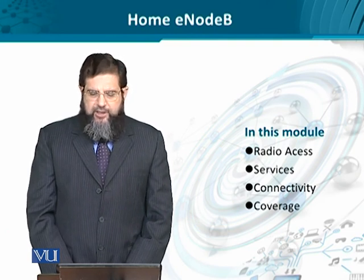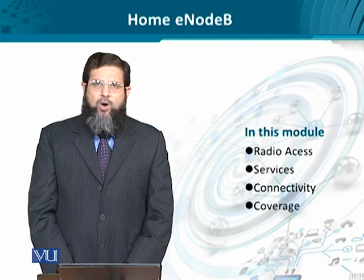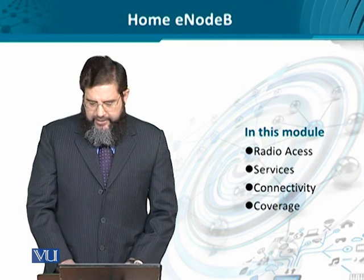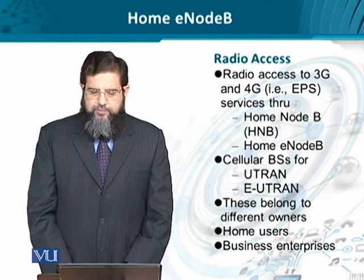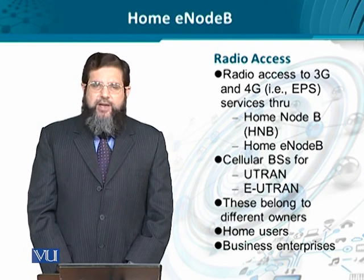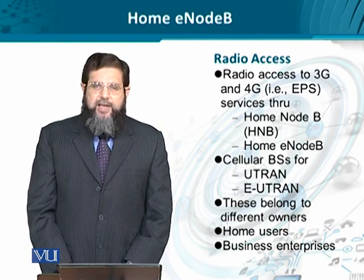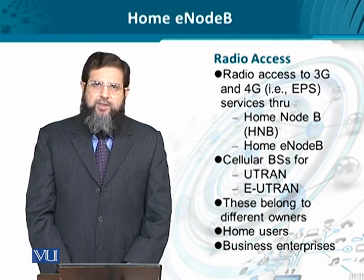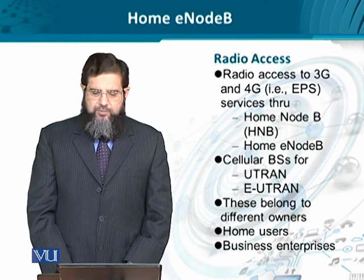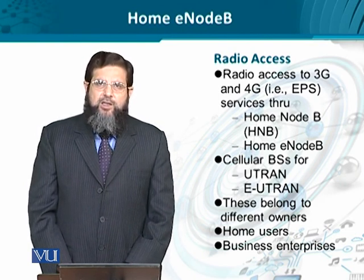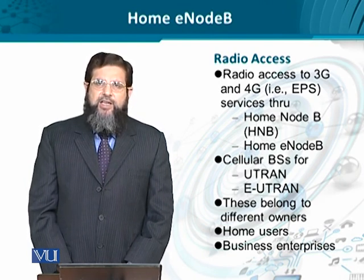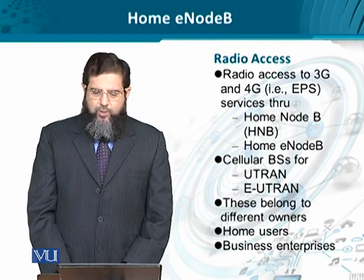We will appreciate the radio access side of home eNodeB, the services which it may offer, and its connectivity and coverage issues. Radio access to 3G and 4G networks is provided through respective network elements — home NodeB in 3G, which is implemented in UMTS terrestrial radio access networks, the UTRAN, and the evolved UTRAN for home eNodeB in 4G.